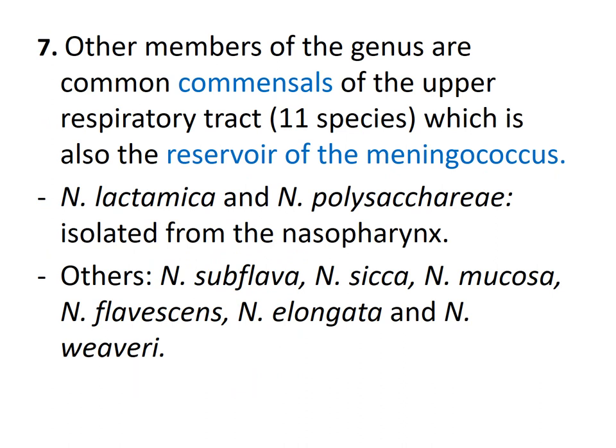Other members of the genus are common commensals of the upper respiratory tract. The 11 species found on mucosal surfaces in human beings include those of the URT, which is also the reservoir of the meningococcus species. Some of these commensal species include Neisseria lactamica, Neisseria polysaccharea, subflava, sicca, mucosa, and others. It is important to remember that besides the two pathogenic species, there are other Neisseria species found as commensals in the upper respiratory tract.